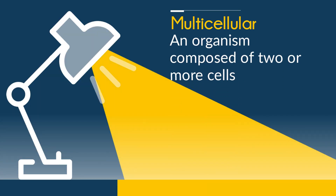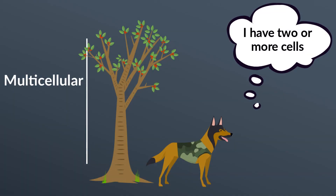Multicellular is an organism composed of two or more cells. This plant and dog are multicellular because they are made up of many, many cells.